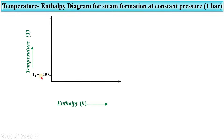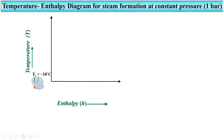Let us assume the temperature of ice initially, Ti, is at minus 10 degrees Celsius. So steam formation starts from ice which is at minus 10 degrees Celsius. This is the temperature of ice at point A on the diagram.